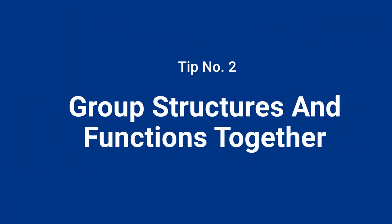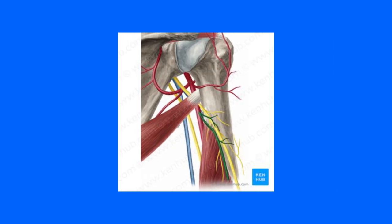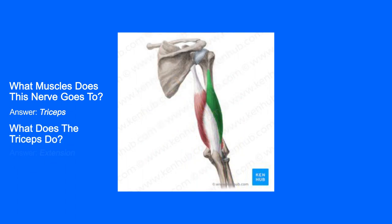Tip number two is to group structures and functions together. There's so much anatomy to learn and memorize, and then someone expects you to learn the function of things — like what are you, a future healthcare professional? But all jokes aside, as hard as it is to identify and memorize all structures in the body, throwing in function seems complicated. One of my favorite ways of learning anatomy is to make it very purposeful. If I learn the radial artery or the radial nerve, I should not only know where it is and what nerve roots it's coming from, but also ask second and third order questions — what muscle does this nerve go to? It goes to the tricep. What does the tricep do? Extension.